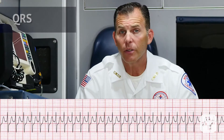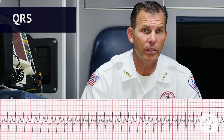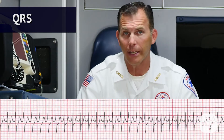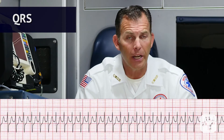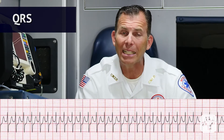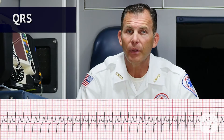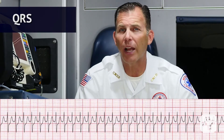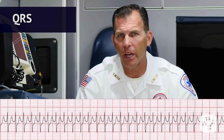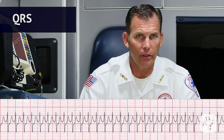First, determine if QRS duration is narrow or wide. A normal or narrow QRS would be about 0.09 seconds or less for a pediatric patient. It is unusual for SVT to present with a wide complex QRS.